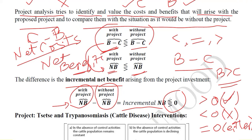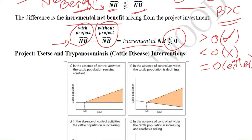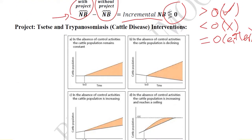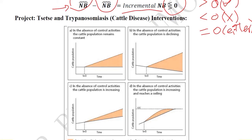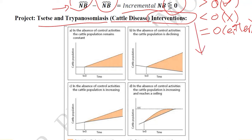Now let us take an example from the FAO — the Food and Agriculture Organization. It is about cattle disease, because cattle can catch some disease and the population can decrease if it is a fatal disease. We use the word intervention here because it is a project where we are introducing some disease control or treatment to counter this cattle disease.